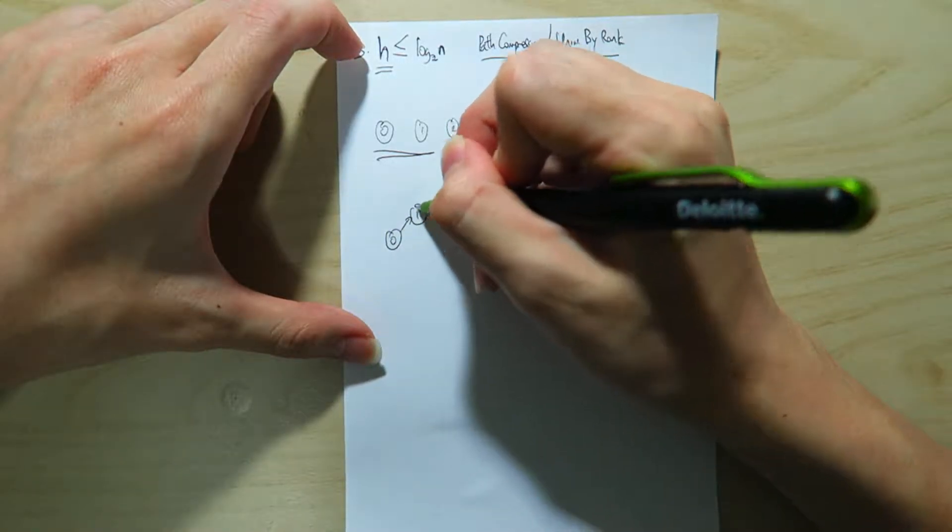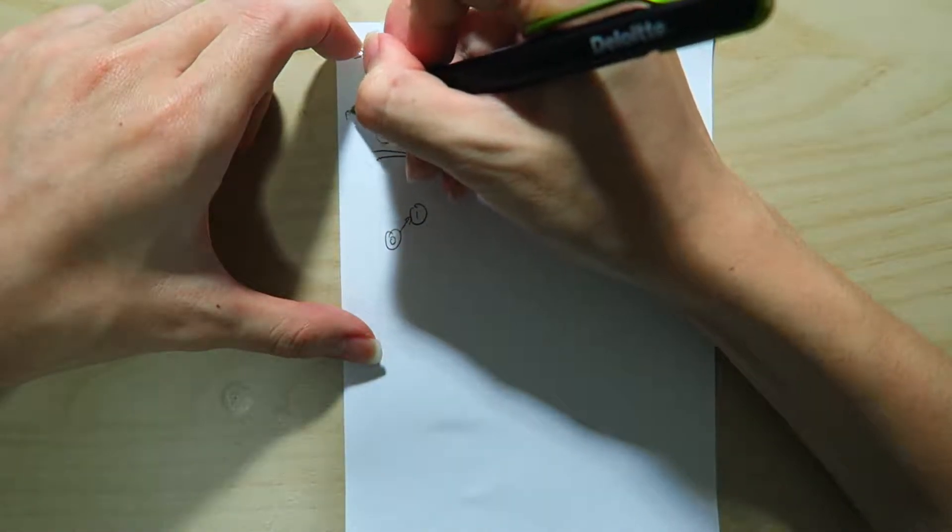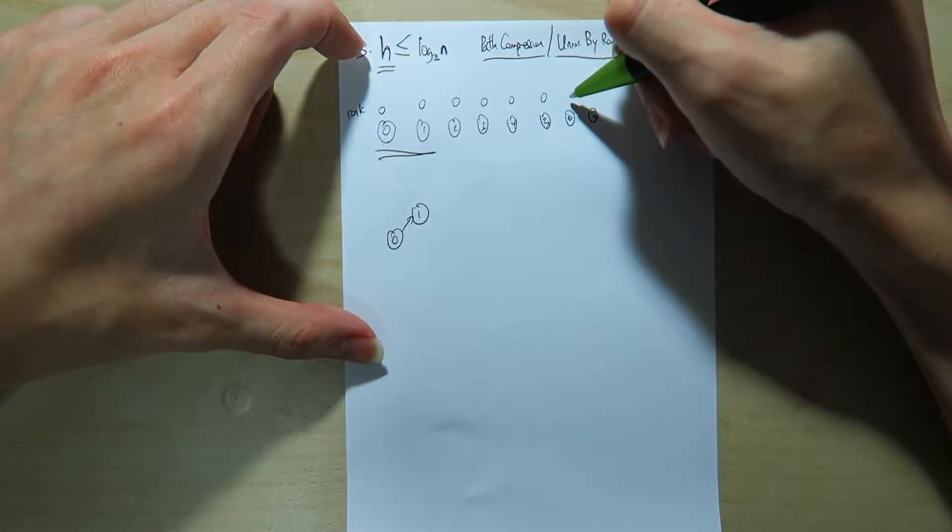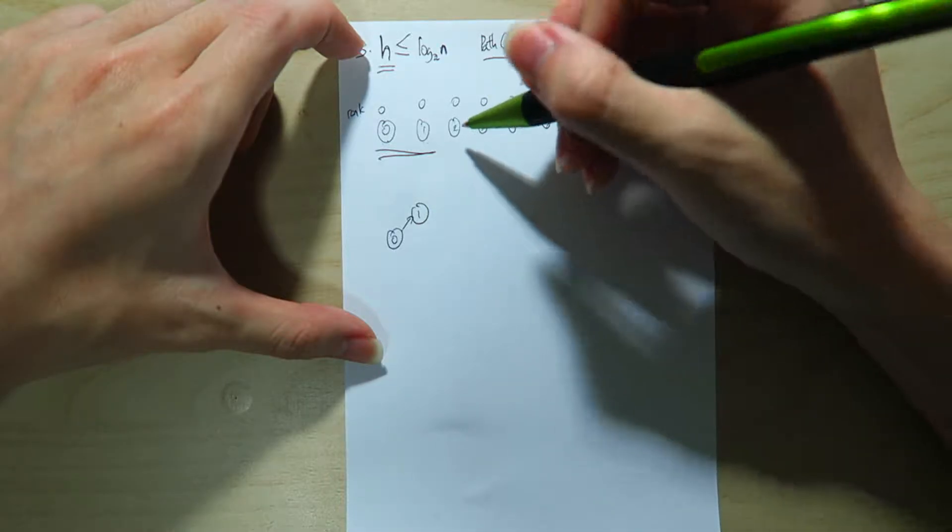so it could be something like this, right? Because the rank of both of them, let's start the rank here, the rank of all of these are initially 0, right? And we know that if the rank is the same, then it's okay to point either way, right?